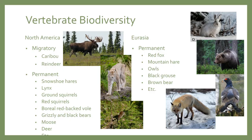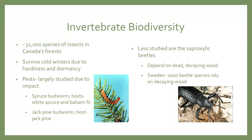When we look at vertebrate biodiversity in North America, we find migratory species such as caribou and reindeer. There are also species such as snowshoe hares, lynx, ground squirrels, red squirrels, boreal, red-backed voles, grizzly and black bears, moose, and deer. Eurasia has a similar mix of animals, including red fox, mountain hare, owls, black grouse, brown bear, and many more. In Canada's forest alone, there are about 32,000 species of insects.